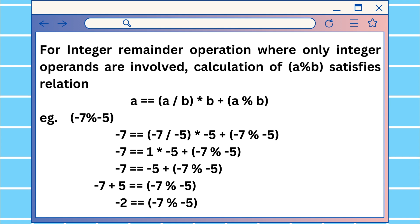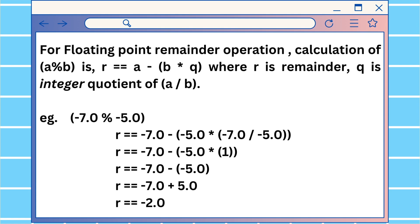For the integer remainder operation where only integer operands are involved, the calculation of a modulo b satisfies: a equals (a/b) multiplied by b, plus (a modulo b). For example, -7 modulo -5 gives remainder -2, which you can verify with the program. For floating point remainder, the remainder r equals a minus (b multiplied by q), where q is the integer quotient of a divided by b — meaning only the integer part, not the decimal. So -7.0 divided by -5.0 gives integer quotient 1, and solving the equation gives remainder -2.0.